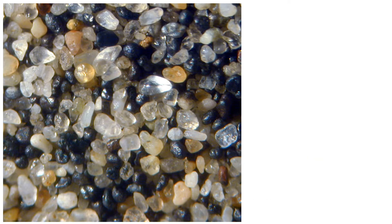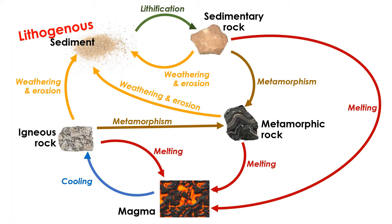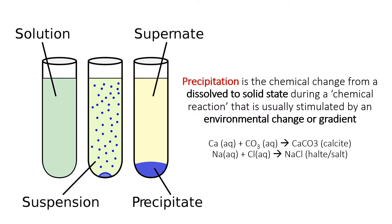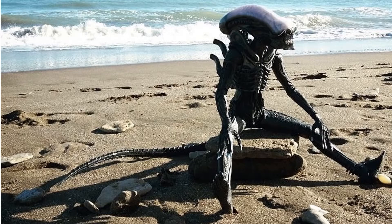Sediment forms from a variety of sources. Lithogenous sediment forms from the breakdown of igneous, sedimentary, and metamorphic rock. Biogenous sediment forms from the hard, mineralized shells of organisms. Hydrogenous sediment forms from chemical precipitation reactions in water. And cosmogenous sediment forms from material brought to earth from outer space.